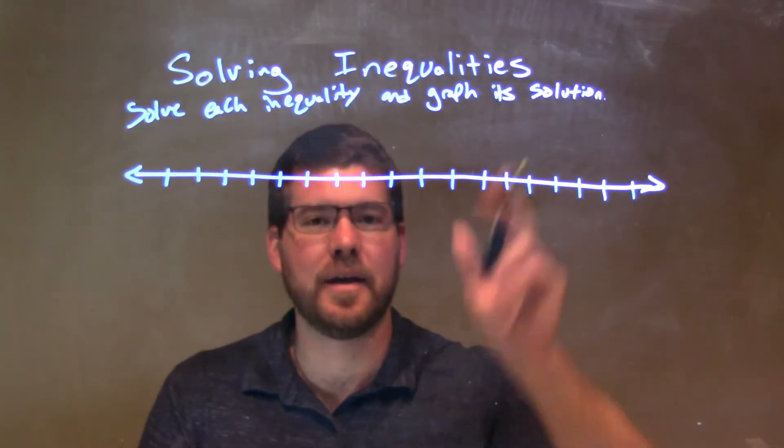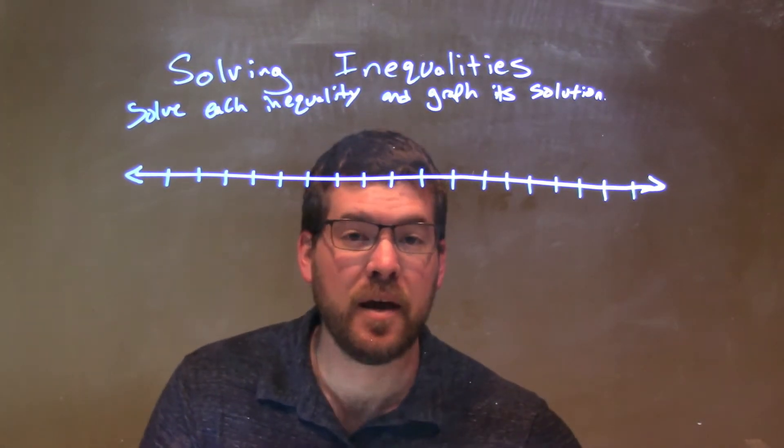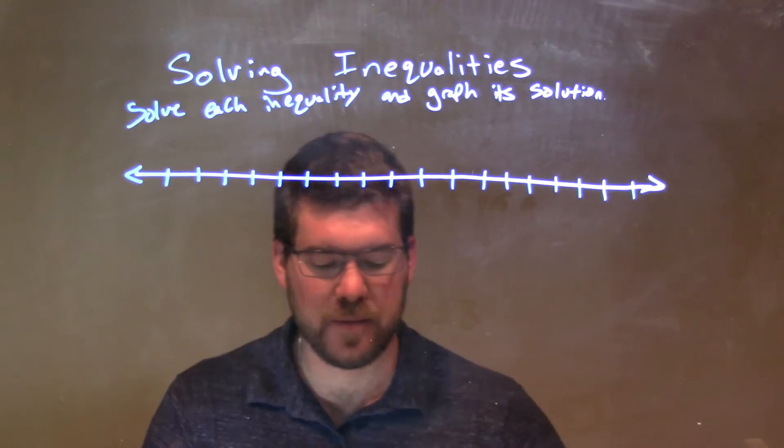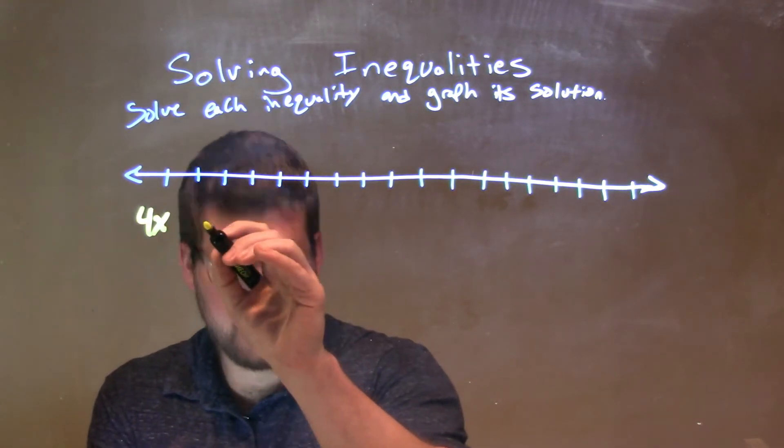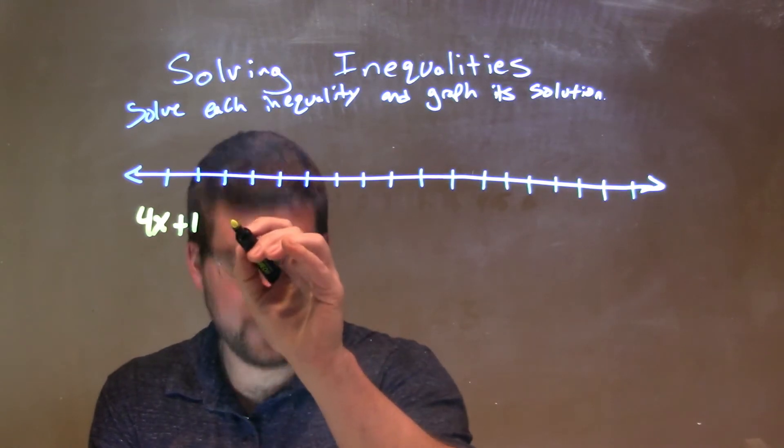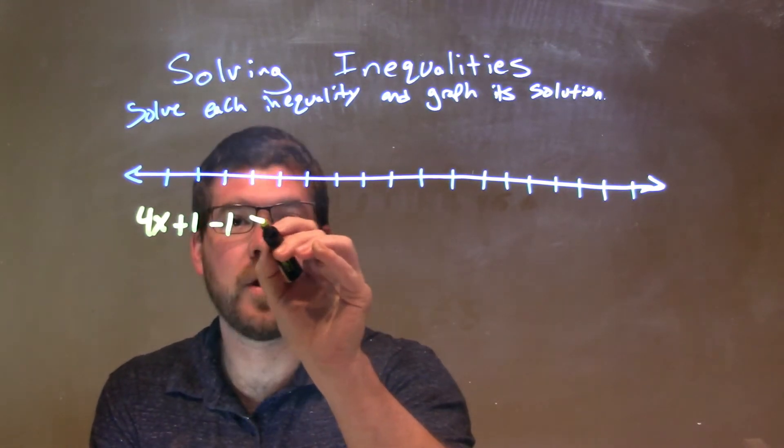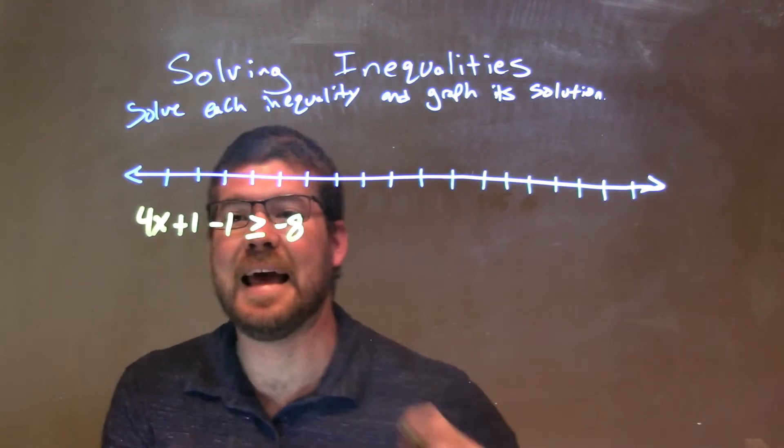We're going to solve each inequality and graph the solution. If I was given this inequality, 4x plus 1 minus 1 is greater than or equal to negative 8.